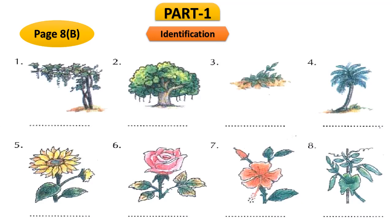You can see there are serial numbers 1 through 8. We need to identify them and write their names in the blank spots. In the first picture, from the top left, you can see there is a creeping tree which is known as the grapevine. So the answer is grapevine.